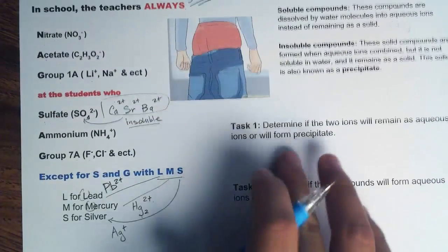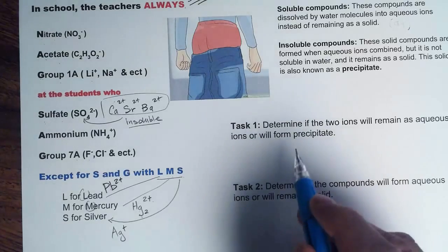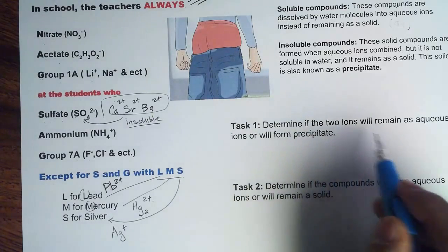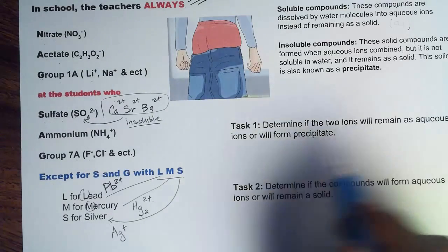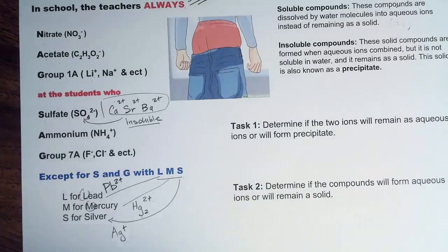Now let's look at Task number 1. In this case we look at two ions — to determine if two ions will remain as aqueous ions or will form a precipitate.